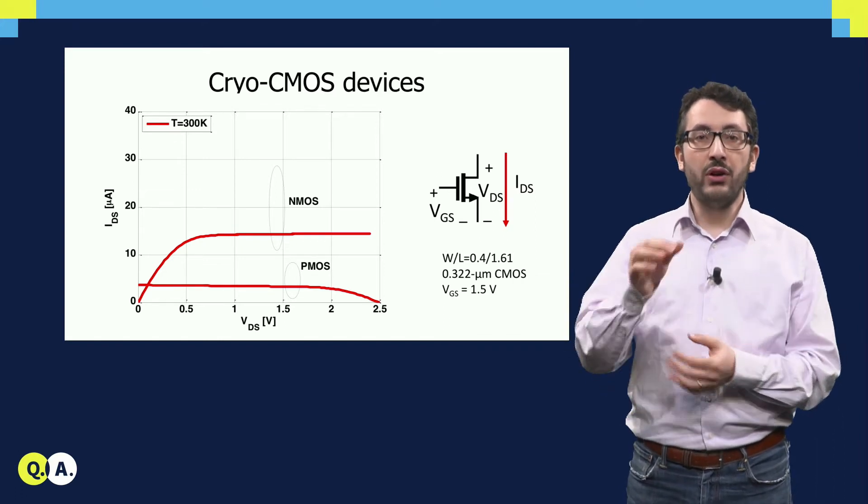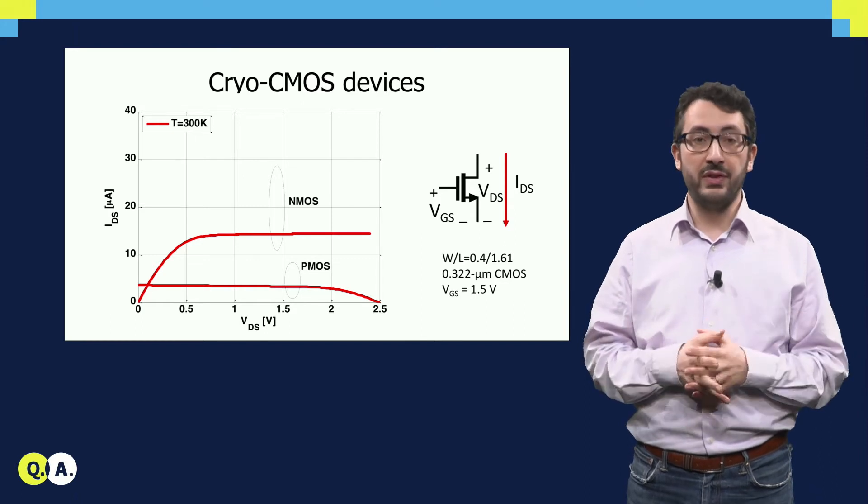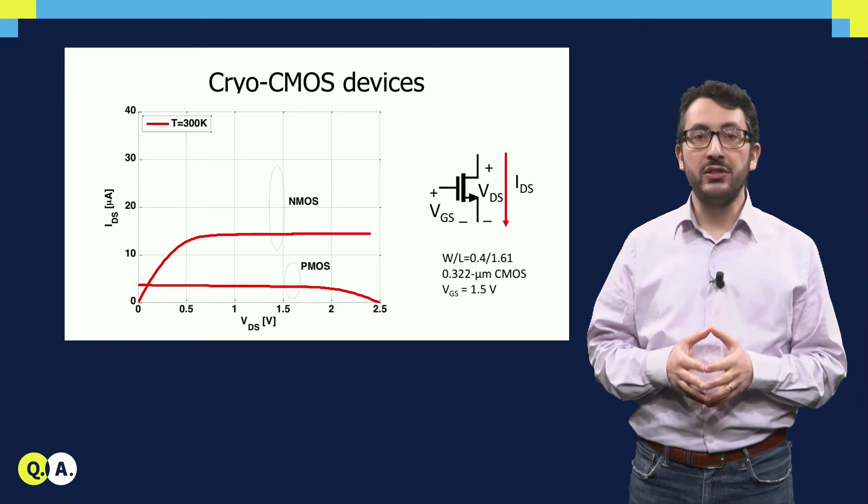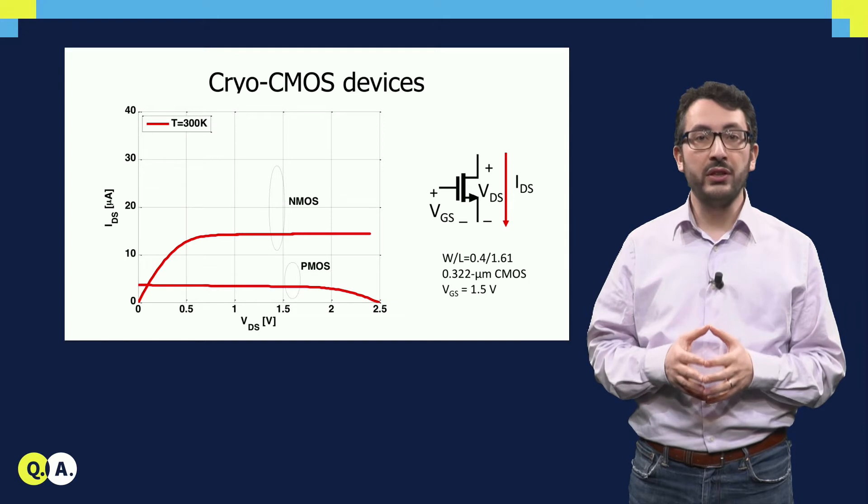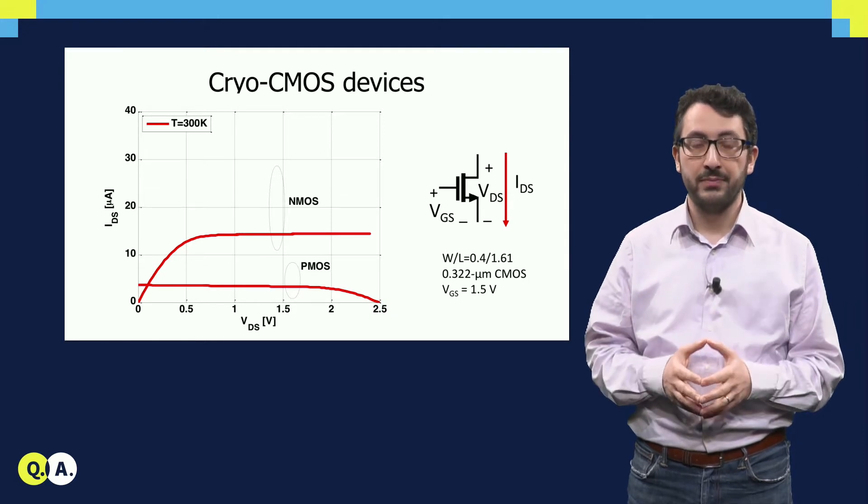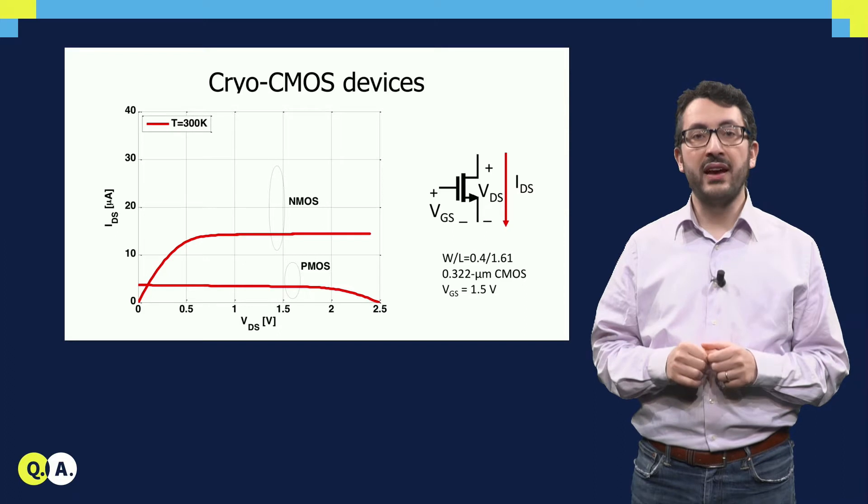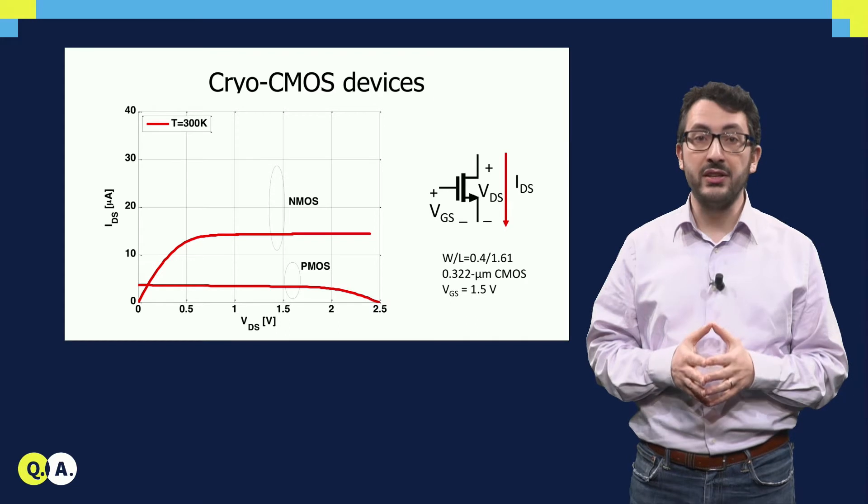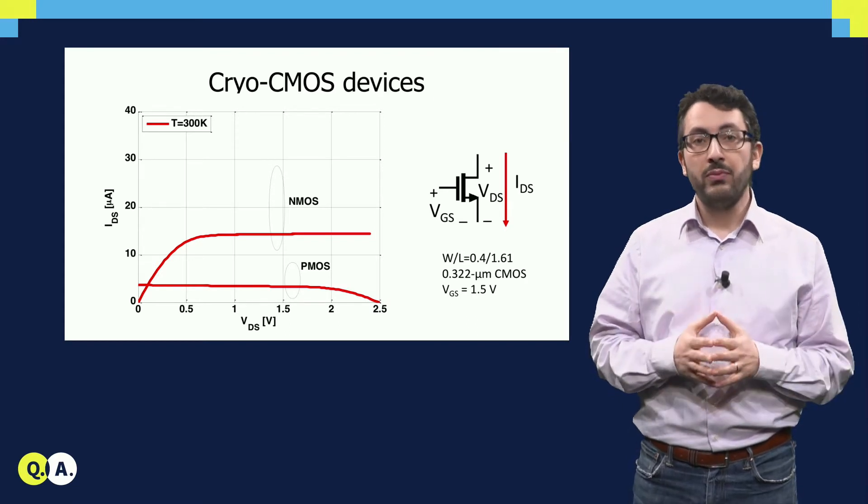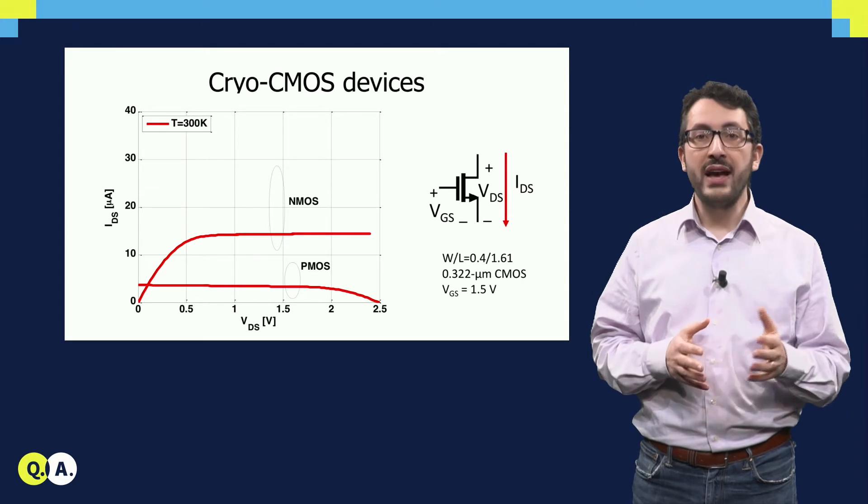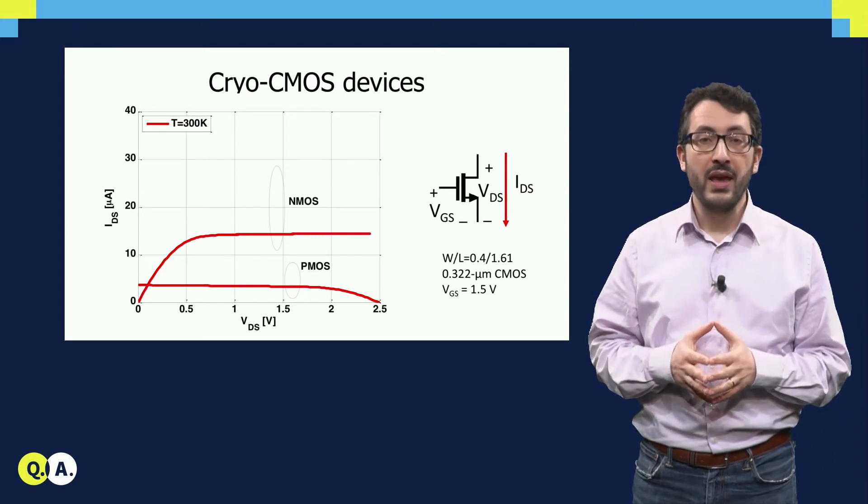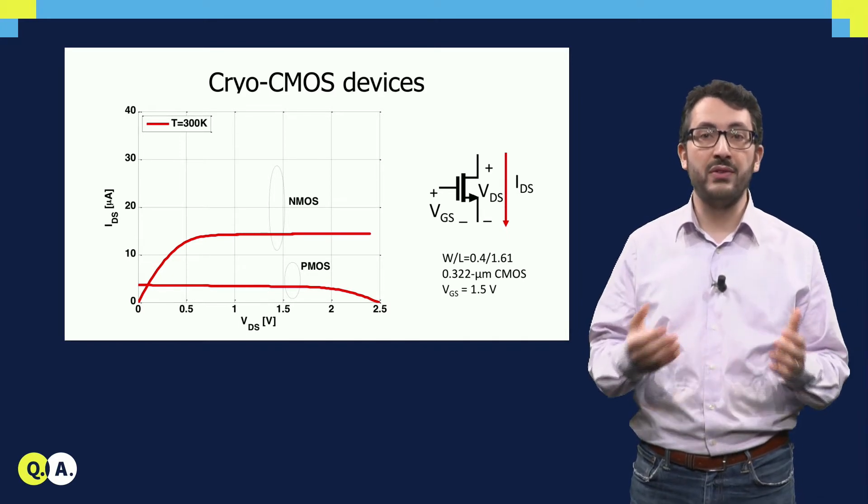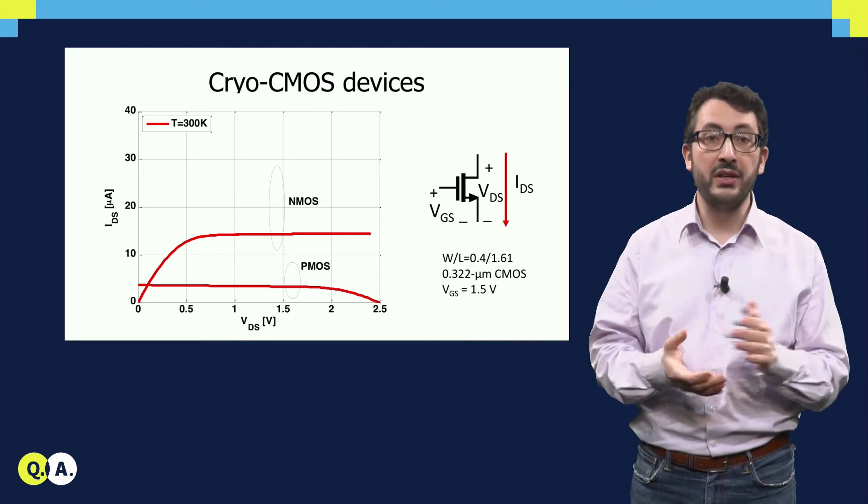Here on the left, you see the current generated by a CMOS transistor at room temperature as a function of the voltage applied to the current terminals. Ideally, you would like that this current is as flat as possible and independent from the voltage at the ends of the transistor. In this plot, you see an NMOS and a PMOS, the two devices that are present in the CMOS technology. In fact, the C in CMOS stands for complementary technology, meaning that you have two different kinds of devices, but that's not very important for the sake of the following discussion.